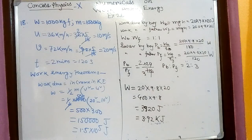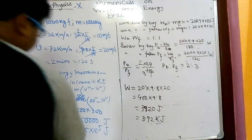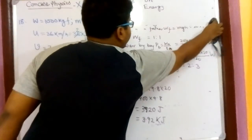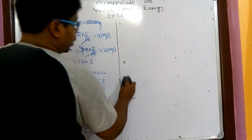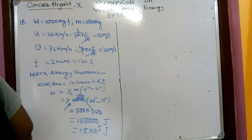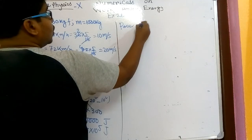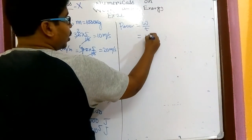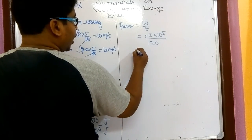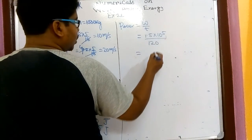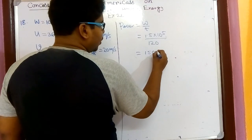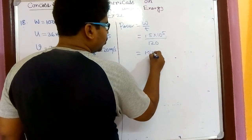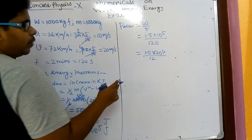This type of question is very important for your exam because here mass and velocities are given but no force or displacement — yet we can find work done using the work-energy theorem. Now the next part: as time is given, we calculate power. Power equals W by T, that is 1.5 into 10 to the power 5 divided by 120 seconds.